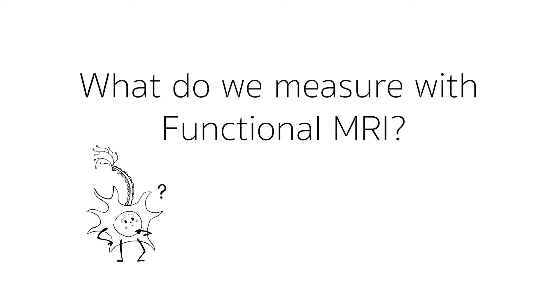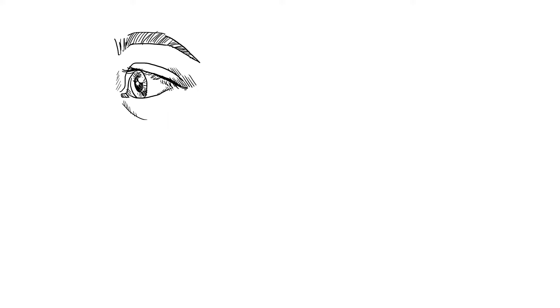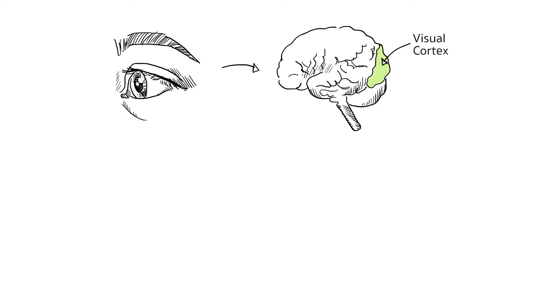Let's look at what happens in the brain when we perform a simple task like looking at something. From the nerve in the eye, signals are sent to a region at the back of the brain called the visual cortex where brain cells process these signals.